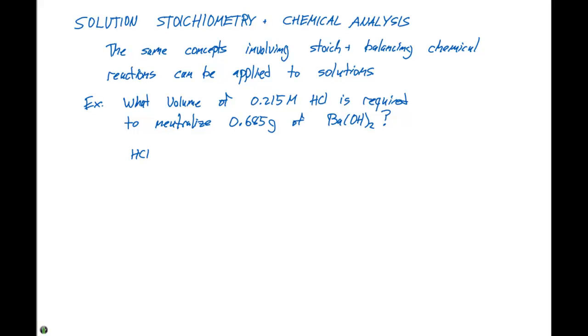We have HCl plus barium hydroxide, which is Ba(OH)2. We need to be able to predict the products of this reaction to solve this particular problem. Our products are gonna be BaCl2 plus 2H2O. In order to balance this particular equation, we need a 2 in front of the HCl.